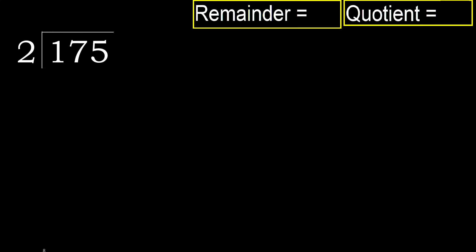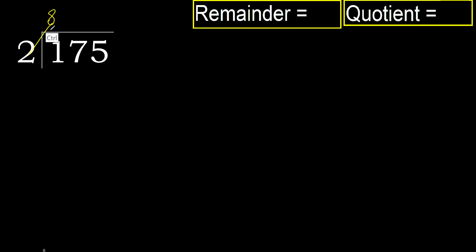175 divided by 2. 1 is less, so move to the next digit. 17 is not less, so we work with 17. 2 multiplied by which number is nearest to 17 but not greater? 2 multiplied by 9 is 18, which is greater. 2 multiplied by 8 is 16, which is not greater. So 17 minus 16 is 1.